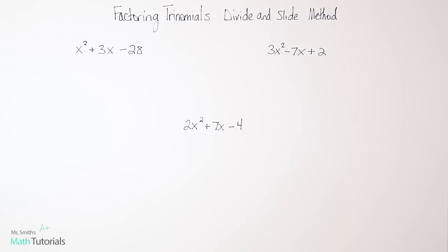Specifically we're going to use the divide and slide method. Now I've heard different names for this method. I've heard it called the drop it low method, the bottoms up method, divide and slide. It's got a lot of different names. I'm sure there are many more out there that I haven't heard but it's definitely the easiest and quickest way to factor that I have seen. So it's my new favorite way.